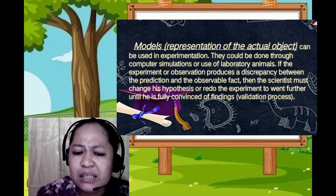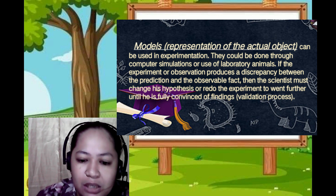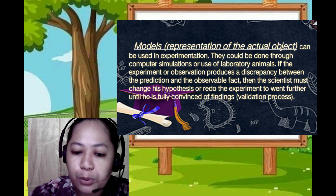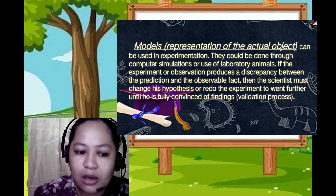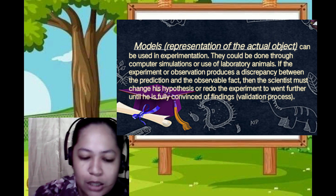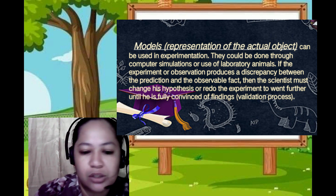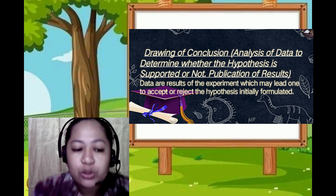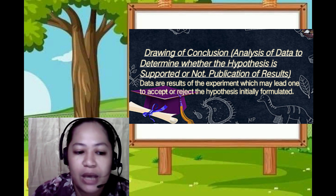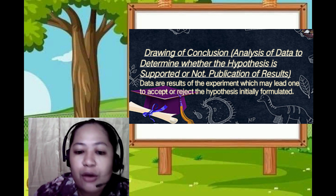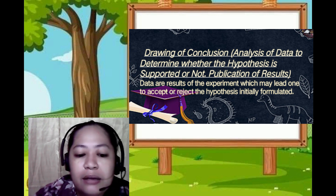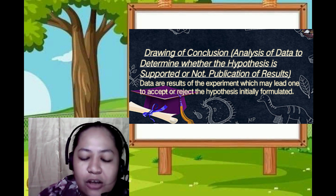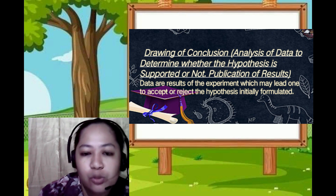Next is representation — models or representations of the actual object can be used in experimentation. This could be done through computer simulation or the use of laboratory animals. Then comes the drawing of conclusions. This is the time when we gather all the information and data we need, and based on the results we perform analysis to determine whether the hypothesis is actually supported or not.